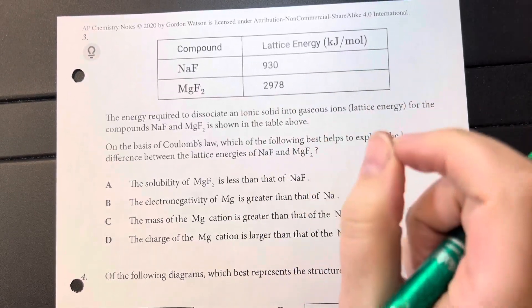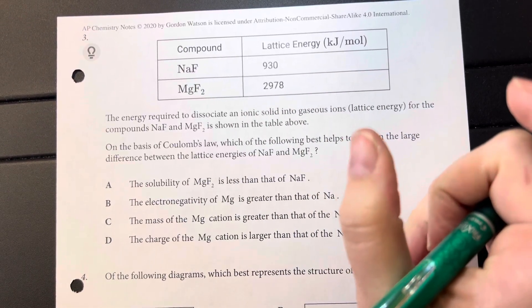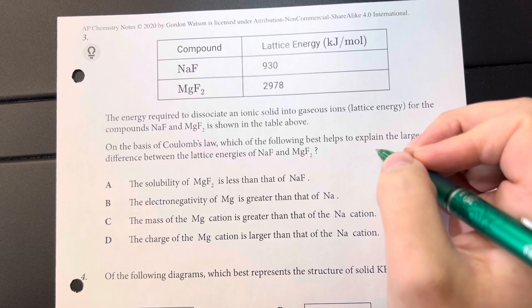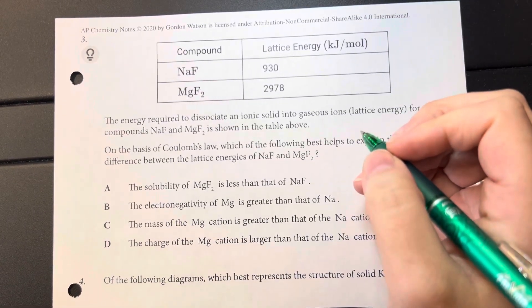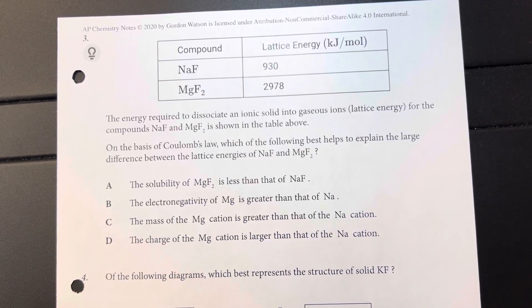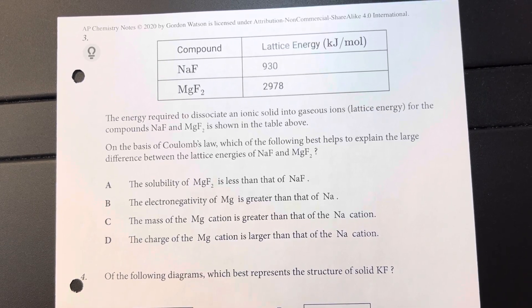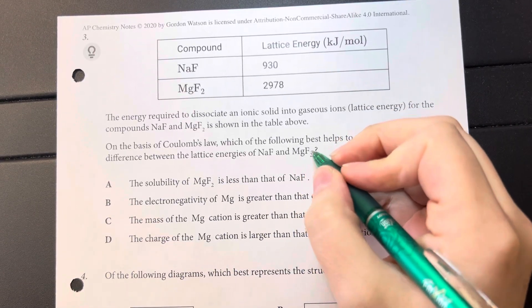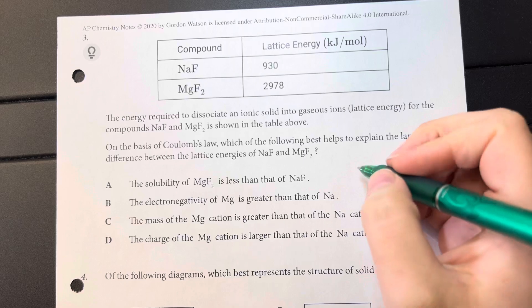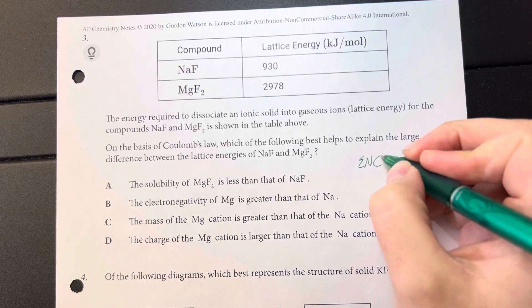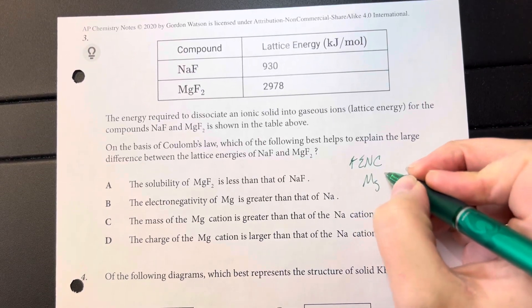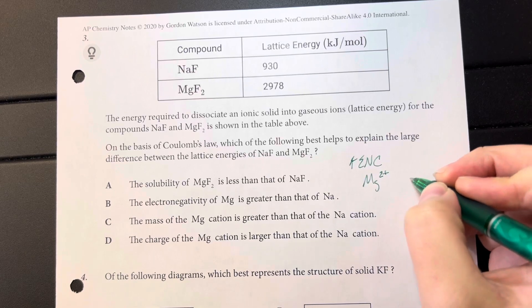Sodium and magnesium are going to be on the same period. And magnesium is going to have a higher intramolecular force, sorry, higher effective nuclear charge. And it also has a higher charge differential between it and fluorine. So I am looking for something about magnesium having a higher effective nuclear charge or that magnesium has a higher charge than sodium.